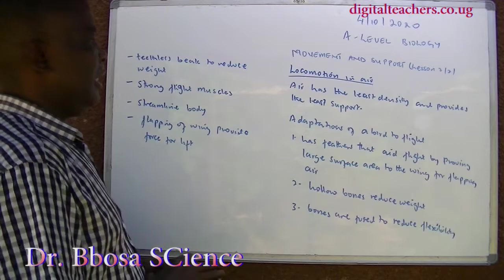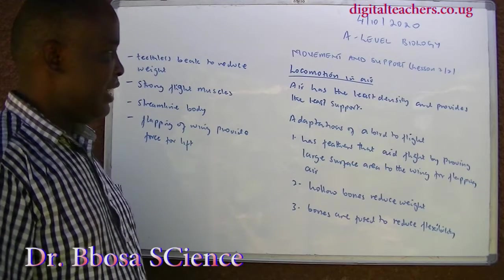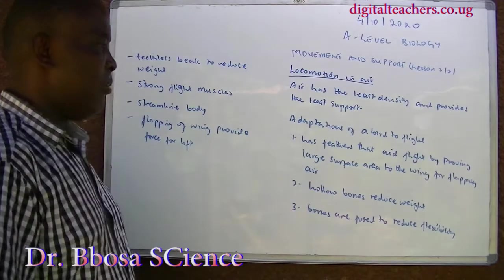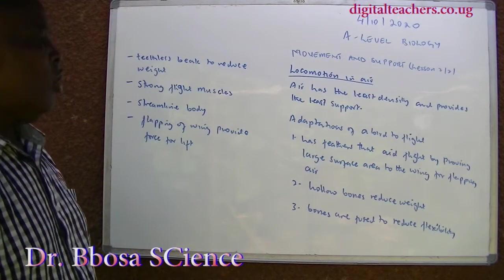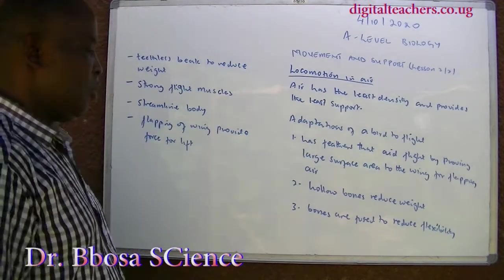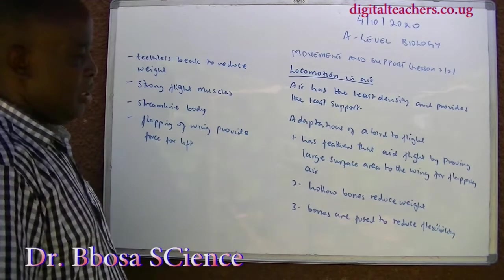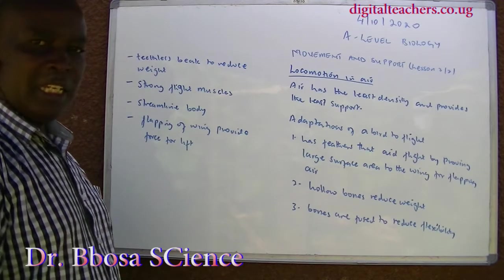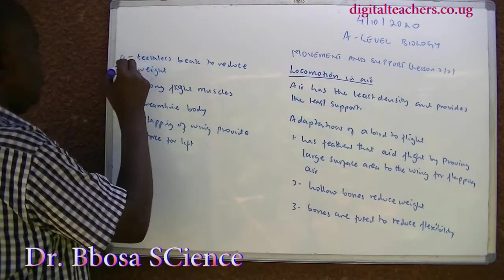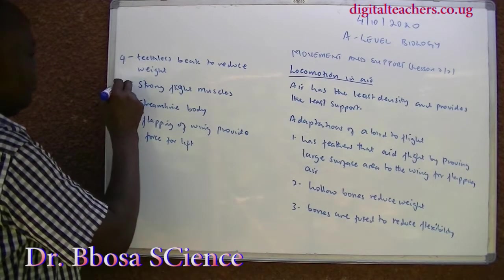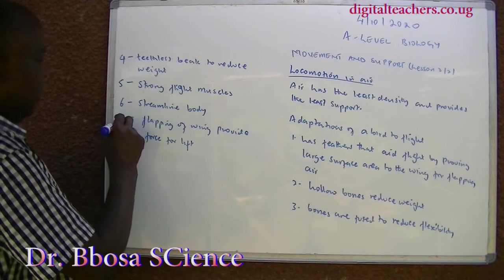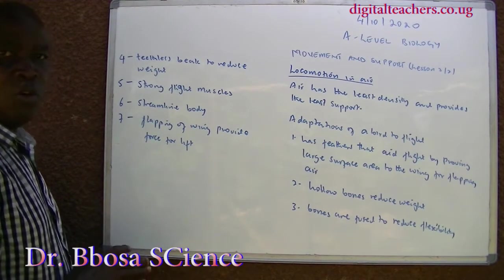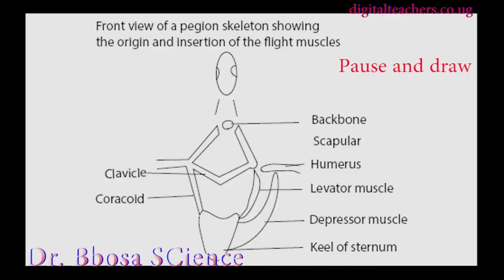Locomotion in air: air has the least density and provides the least support. Adaptations of the bird to fly include: one, feathers that aid flight by providing large surface area to the wings for flapping air; two, hollow bones reduce weight; three, bones are fused to reduce flexibility so that a bird flies as one entity; four, toothless beak reduces weight; five, strong flight muscles; six, streamlined body; seven, flapping of wings provides force for flight. The diagram below shows a front view of a pigeon skeleton showing the insertion of flight muscles.